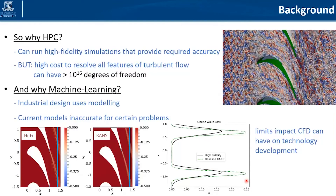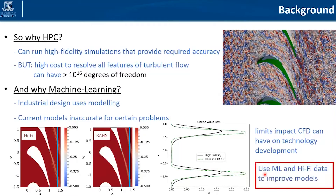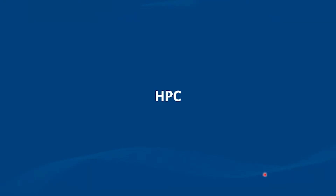Therefore, what we want to do is use machine learning and apply it to the high-fidelity data to improve the models that we can then use for predicting the flow. Let me start by talking a little bit about the HPC part and what we can do with the data generated on these very large systems.